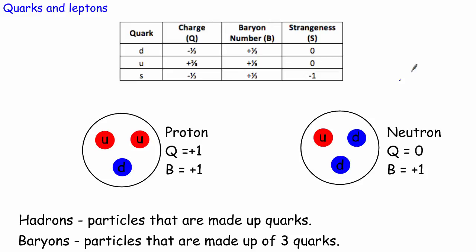To summarise: a proton has a charge of plus one, a baryon number of plus one, and is made up of up, up, down quarks. A neutron has a charge of zero, a baryon number of plus one, and its quark composition is up, down, down. You have to know the quark compositions of both the proton and the neutron for your exam — a proton is up, up, down and a neutron is up, down, down.